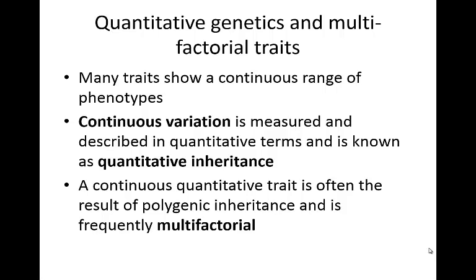Many of the disorders that we've talked about this semester rely on single gene mutations or changes. However, many traits actually involve multiple different genes at the same time, and a lot of these traits are going to show a continuous range of phenotypes. When you measure it and describe it in quantitative terms, it can be known as quantitative inheritance. This continuous quantitative trait is often the result of polygenic inheritance, and it's frequently multifactorial or has many different genes involved.